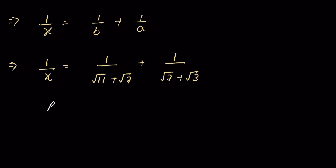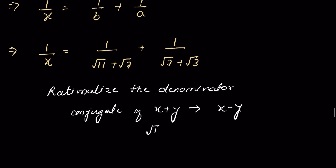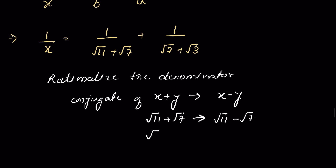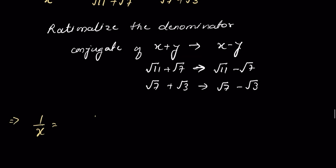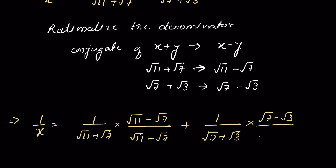Now we rationalize each denominator. The conjugate of (x + y) is (x − y). So the conjugate of (√11 + √7) is (√11 − √7), and the conjugate of (√7 + √3) is (√7 − √3). Therefore: 1/x = [1/(√11 + √7)]·[(√11 − √7)/(√11 − √7)] + [1/(√7 + √3)]·[(√7 − √3)/(√7 − √3)].